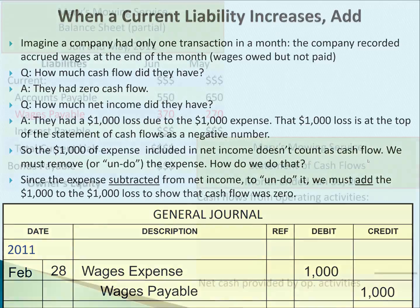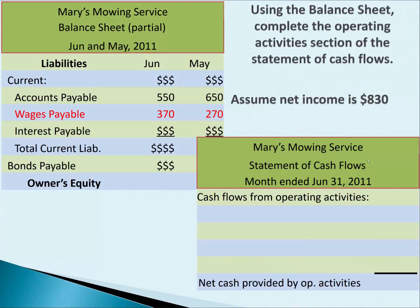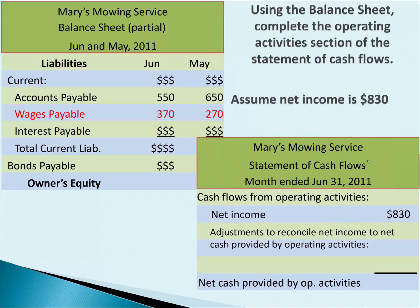Now let's do an example using our statement of cash flows. We'll assume net income was $830. We're focusing on wages payable. Wages payable increased, and since we said if wages payable increases, cash flow must go in the same direction, we add the $100 difference. This company's cash flow from operations was $930.